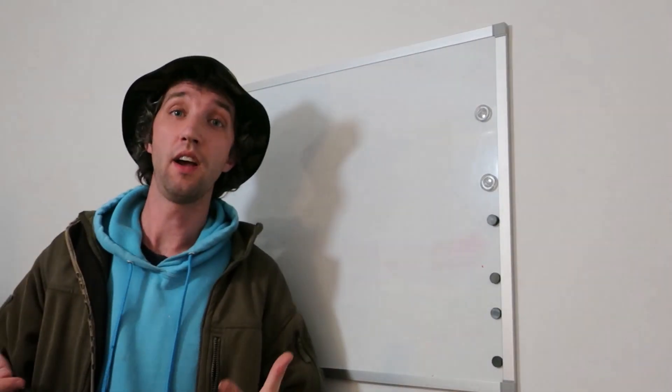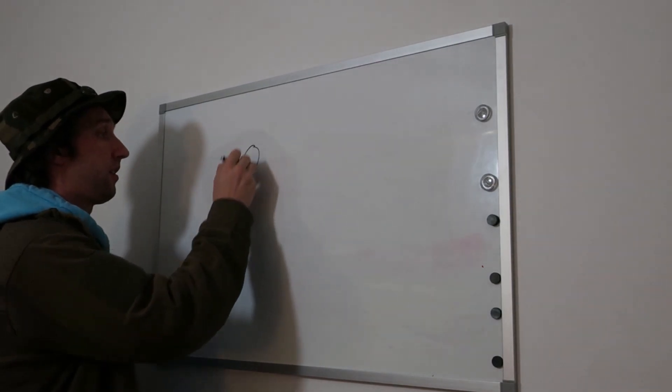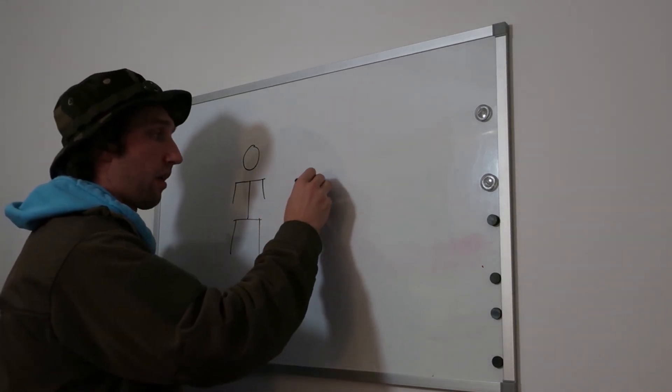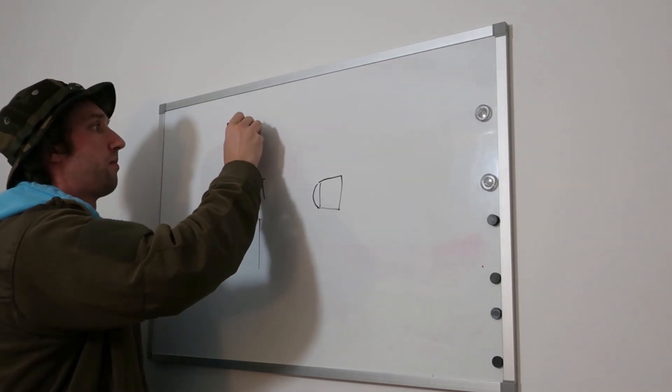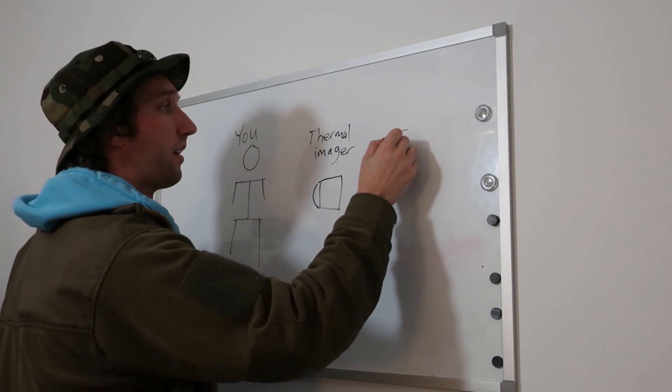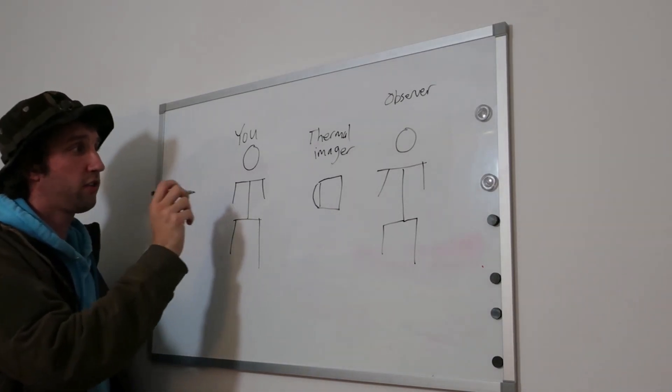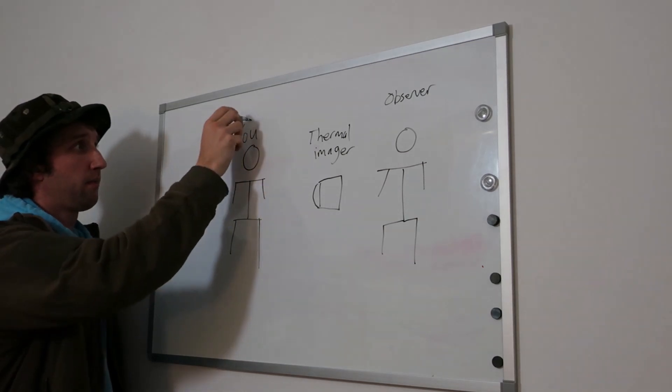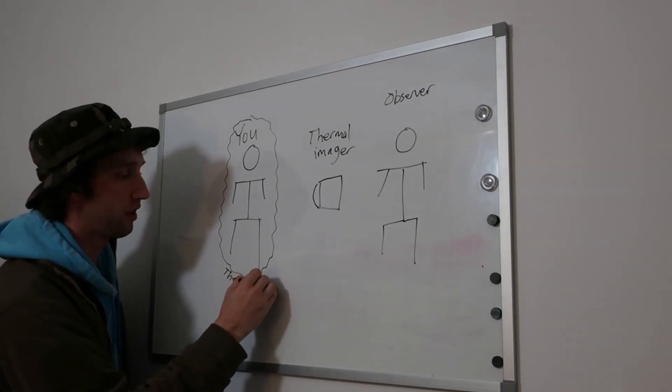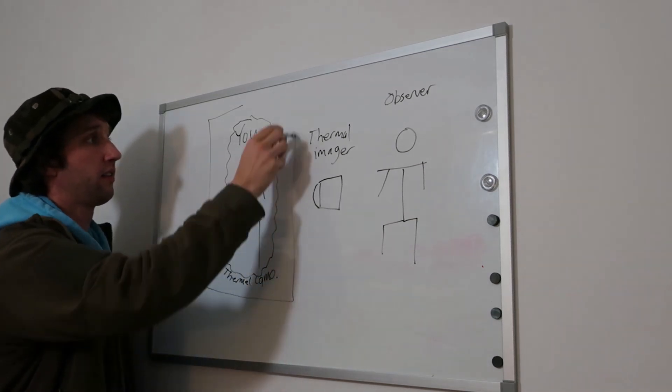What is the anatomy of a successful thermal detection? There's three things involved. Obviously, there is you hiding in the woods or wherever you happen to be. Then there is the thermal imaging device. So here's you, here's the thermal imager, and then there's the observer who is looking at you or trying to find you with the thermal. But there's more to it than that. You have thermal camouflage, and that's what we're trying to evaluate here.